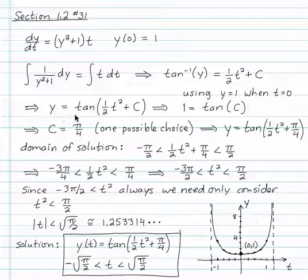Apply a tangent to both sides. It's y equals tangent of 1 half t squared plus C. And then using our initial condition, 1 is equal to tangent of C.